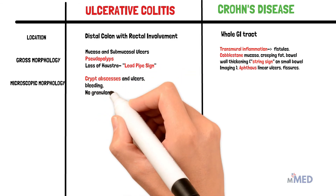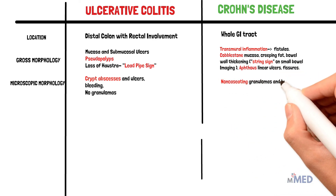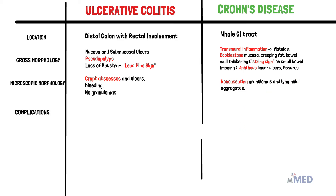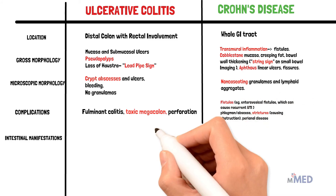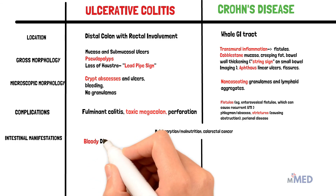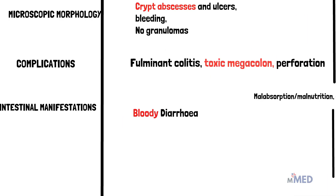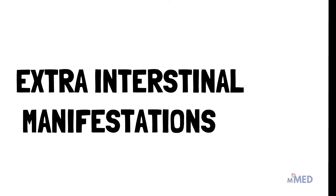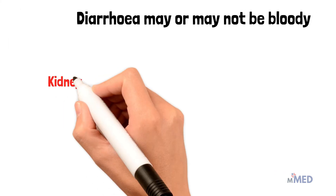On microscopic morphology, ulcerative colitis shows crypt abscesses and ulcers but no granulomas, while Crohn's disease shows non-caseating granulomas and lymphoid aggregates. Complications of ulcerative colitis include fulminant colitis, toxic megacolon, and perforation; Crohn's disease complications include fistulas, strictures, obstruction, and perianal disease. Malabsorption, malnutrition, and colorectal cancer are common to both. Ulcerative colitis patients present with bloody diarrhea, while Crohn's patients may or may not. Special extra-intestinal manifestations: sclerosing cholangitis is key in UC, while kidney stones and gallstones are important in Crohn's disease.